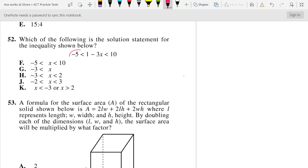So I'm going to set this up as two separate inequalities. In other words, it's going to be negative 5 is less than 1 minus 3x,